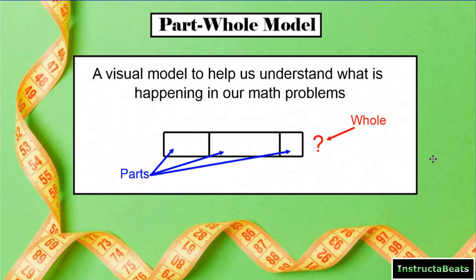A part-whole model is a visual model to help us understand what is happening in our word problem. We use it for a very specific type of word problem. Basically, you're drawing a bar or a tape — some people call it a bar model, some people call it a tape diagram — and you're showing the relationship between the parts of a number and the whole.